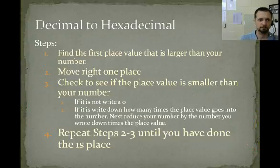Decimal to hex. This is the same rules that we did in octal. You go through, find the first thing that's big or too big, then you start going to the right. If the place value is bigger than your number, you write a 0. If it's smaller than your number, you write down how many times that place value can be put into your number, and then you reduce your number. So let's go ahead and get it done.